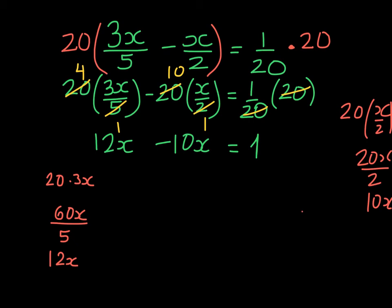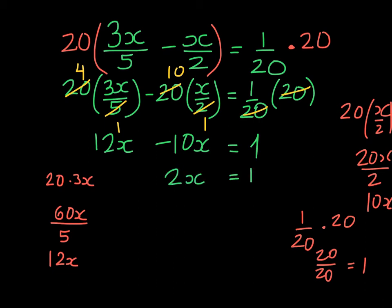What happened there? Well, if we multiplied 1 twentieth times 20, we would end up with 20 over 20, which reduces to 1. We then group the x's — we get 2x is equal to 1. Our last inverse operation is to divide by 2. And so x is equal to 1 half.